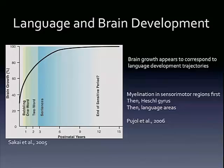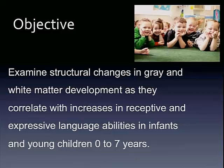We might expect to see similar relationships between language development and brain development as we see with just age and brain development. That's exactly what we're going to look at in this very young sample — structural changes in gray and white matter as they relate to increases in both receptive and expressive language. We have a very young sample of children zero to four years, and then we'll also be looking at children three to seven years — two subsamples.